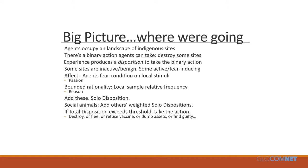Agents do associative fear learning on local stimuli — they associate indigenous sites with aversive experiences. That's their affective component. They also take a local sample of what's going on around them: what's the likelihood that a randomly selected person is an enemy? They make a non-Bayesian relative frequency calculation, which produces their solo disposition to retaliate. But they're social animals and also experience a weighted sum of other agents' solo dispositions. If that total exceeds a threshold, they take action — destroy the village, flee a portfolio, refuse vaccine, find guilty.